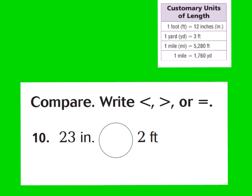For the next set of questions, move down to question number 10. We're going to compare by writing greater than, less than, or equal to, to compare two different values. Number 10 has 23 inches and 2 feet. We don't have the same units, but we can fix that. Let's convert 2 feet into inches so we can compare. Looking at our chart, 1 foot equals 12 inches, so 2 feet equals 24 inches. Comparing 23 inches to 24 inches, two feet is greater.